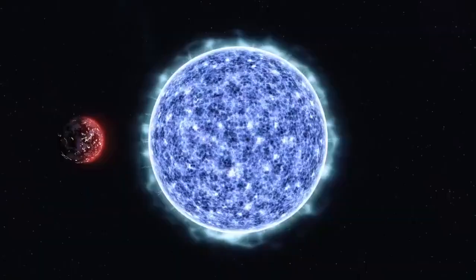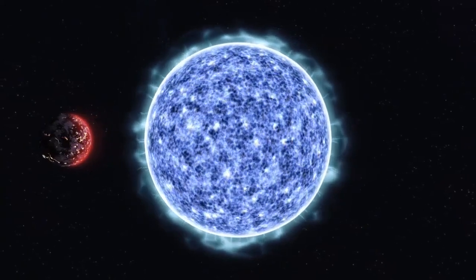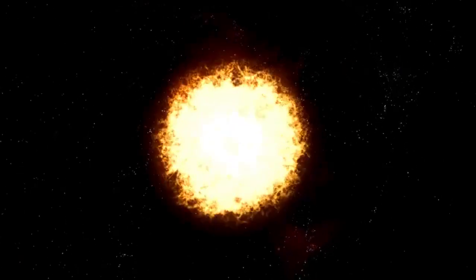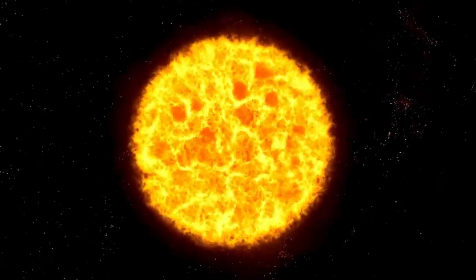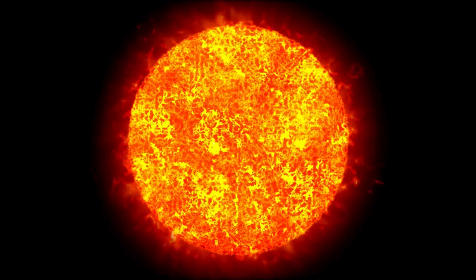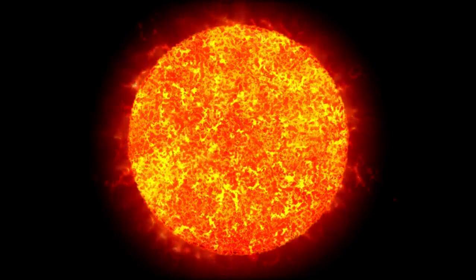As the big cosmic show of Betelgeuse unfolded and its brightness went back to normal, it left the space experts and sky watchers scratching their heads. Instead of giving answers, it raised more questions about what might happen to this amazing star. During this time, Betelgeuse got a bit cooler, and scientists found something similar to sunspots on our sun. These star spots on Betelgeuse might have caused the temperature to drop.